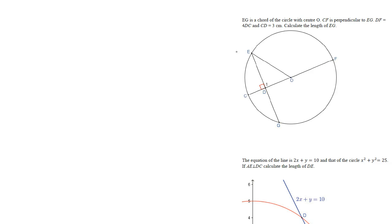Let's try the next problem. EG is a chord of the circle with center O. CF is perpendicular to EG, meaning they are at 90 degrees to each other. DF is equal to 4 times DC, and DC is 3, so DF equals 4 times 3, which is 12 centimeters.